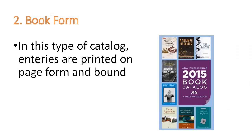The next form of catalog is book form catalog. This is like a book, and in this type of catalog entries are printed on pages and bound. They are in book shape and therefore called book catalog, because the pages of this type of catalog are bound and formed. So this is called book form.